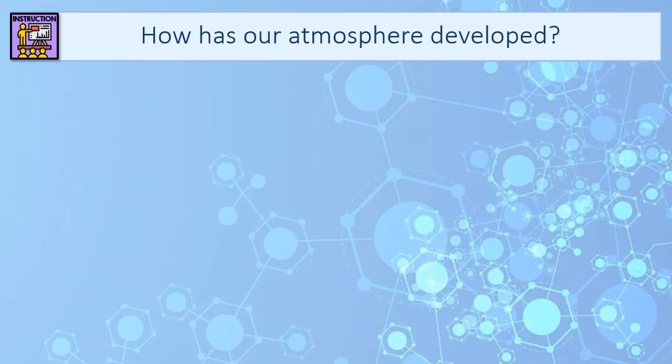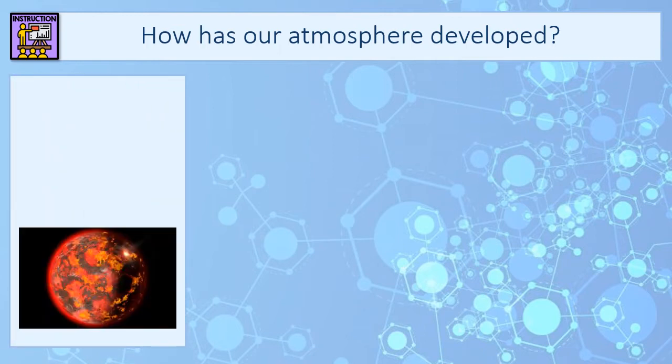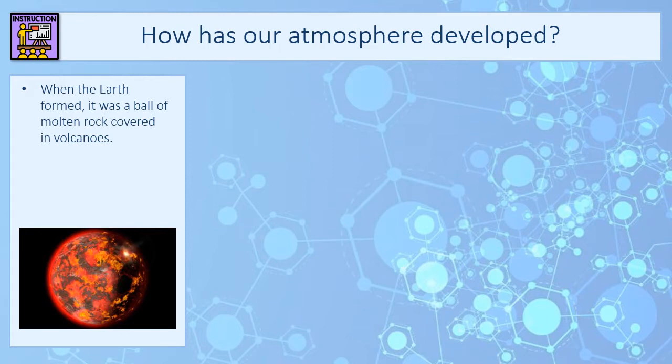The first topic we're going to talk about today is how our atmosphere has developed from the earth's early atmosphere. When we talk about the earth's early atmosphere we mean what the earth was like when it was first formed, and we're talking billions of years ago. When the earth first formed it was just a ball of molten rock and the surface was covered in volcanoes.